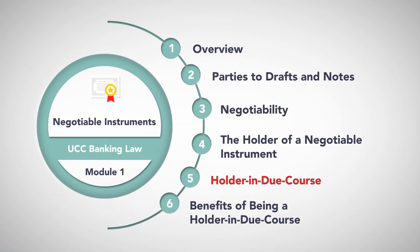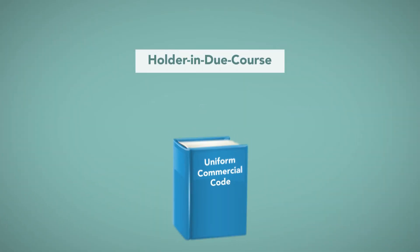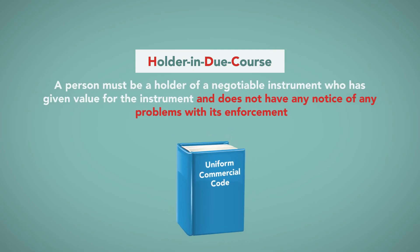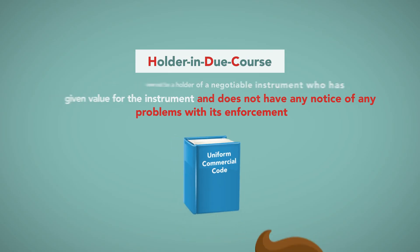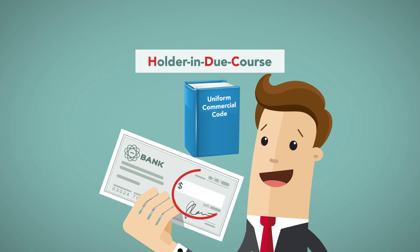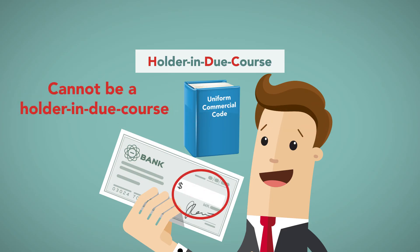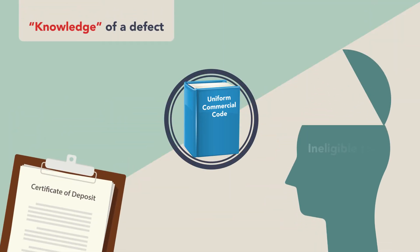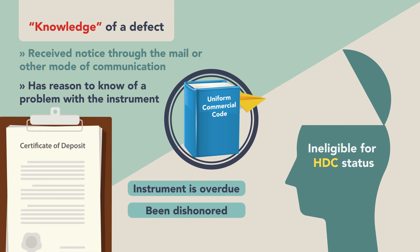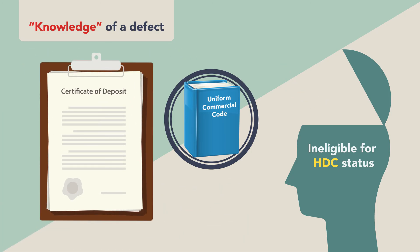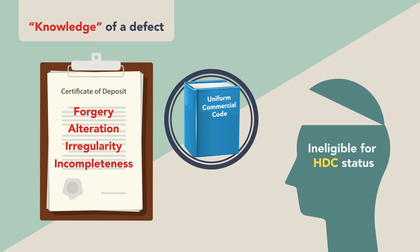Holder in Due Course. To be considered a holder in due course — which for brevity we'll refer to as an HDC — a person must be a holder of a negotiable instrument who is given value for the instrument and does not have any notice of any problems with its enforcement. The instrument must be complete. A person in possession of a check missing the amount, for example, cannot be a holder in due course. A person has knowledge of a defect under the code, thus depriving HDC status, if she has received notice through the mail or other mode of communication, or has reason to know of a problem with the instrument. If a person has noticed that an instrument is overdue, been dishonored, or is in default, the person cannot be an HDC. An instrument that contains visible indications of forgery, alteration, irregularity, or incompleteness also effectively deprives the possessor of HDC status.